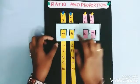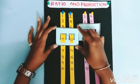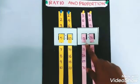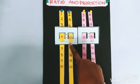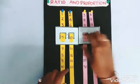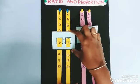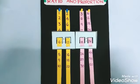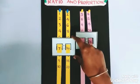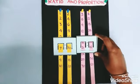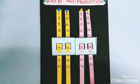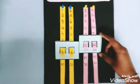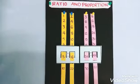This is proportion. Like this we can see many examples. 5 is to 10 equals 15 is to 30. 5 ones are 5, 2 fives are 10; 15 ones are 15, 2 fifteens are 30. Like that, 6 is to 12 equals 18 is to 36. 7 is to 14 equals 21 is to 42. 8 is to 16 equals 24 is to 48.